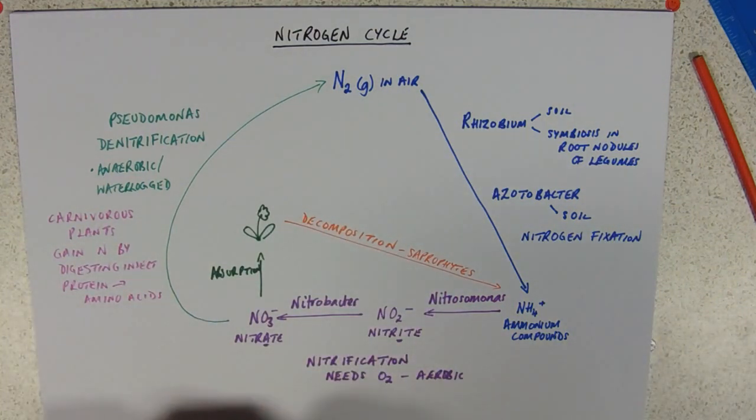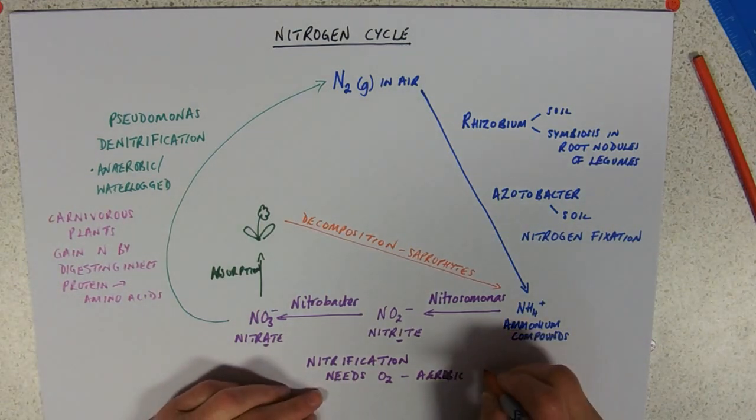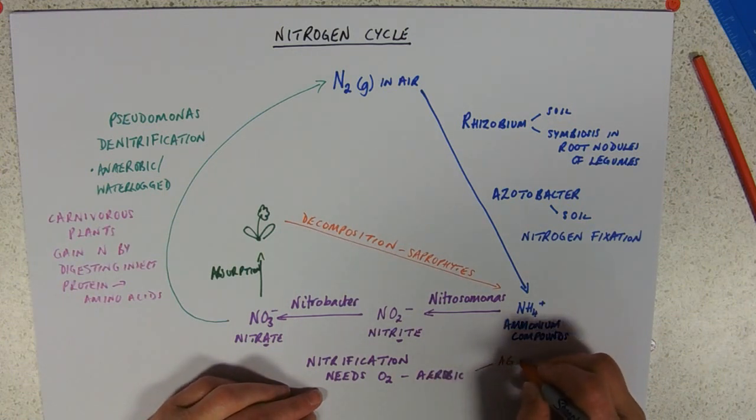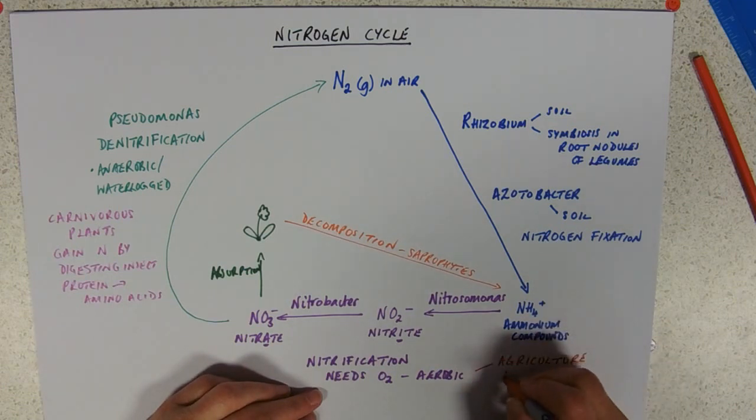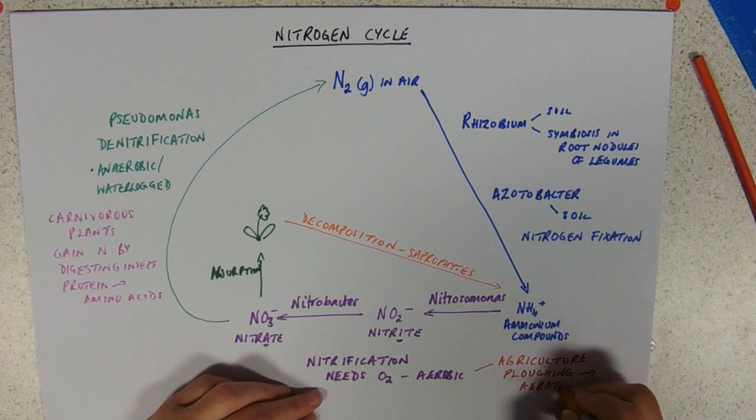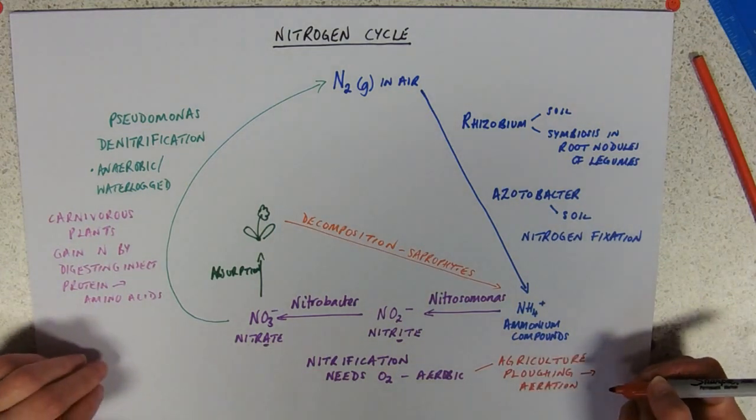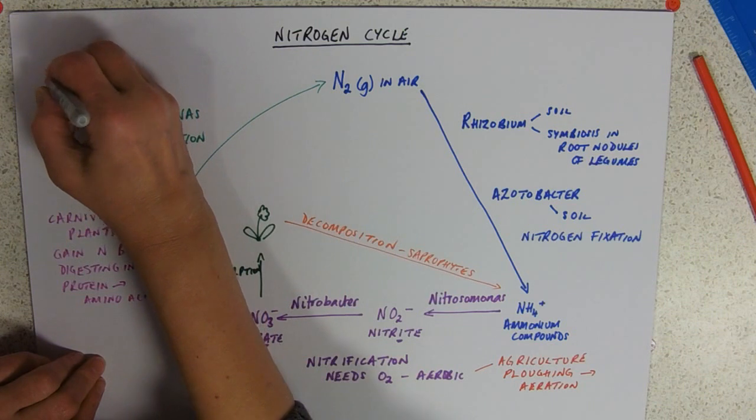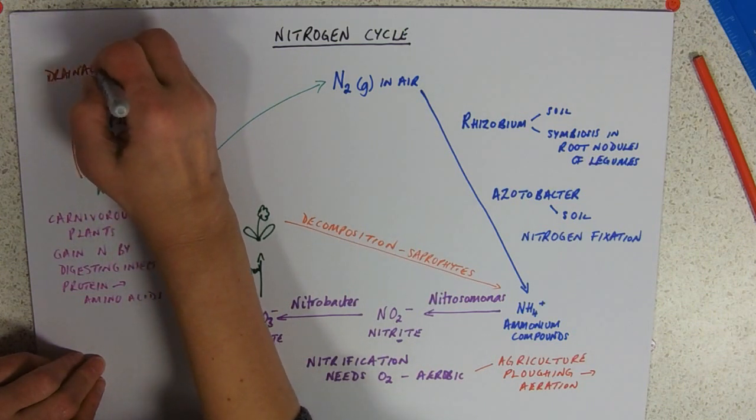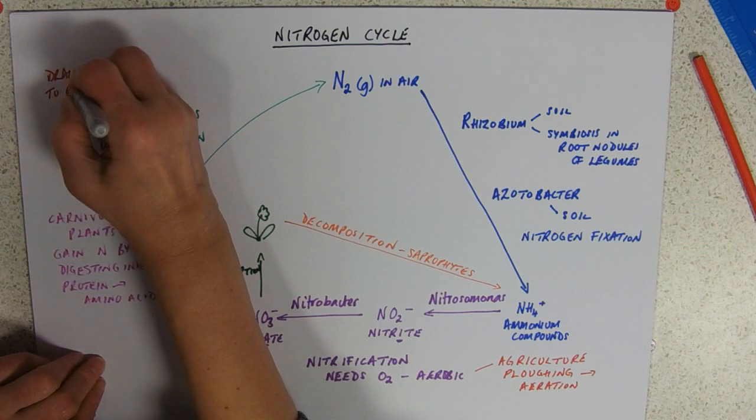There's also this sort of idea of agricultural practices that we need to be aware of. In agricultural practices, we're often looking at making the conditions more aerobic. So in agriculture, you've got ploughing, so that you've got aeration. You've got drainage to reduce waterlogging.